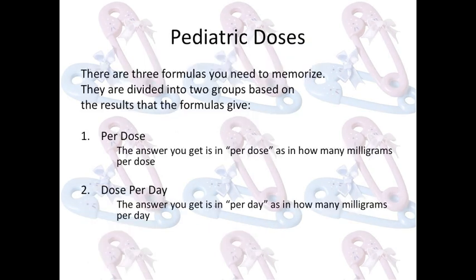There are three formulas you need to memorize. They are divided into two groups based on the results that the formulas give — they give you either the per dose or the dose per day. Per dose: the answer you get is how many milligrams per dose, how many milligrams every time you take it. Dose per day: the answer is how many milligrams per day, the total amount in the day.